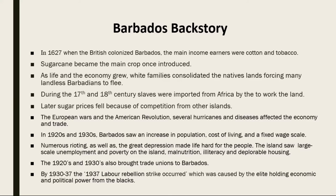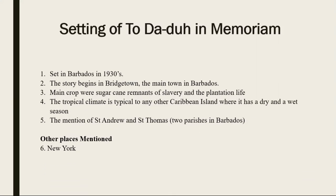Now let us look at the setting of the short story 'To Da-duh in Memoriam.' The story is set in Barbados in the time period of 1937, which we already know had many political changes, civil unrest, and strikes on the island — a very difficult time period. We will notice the mention of Bridgetown, which is the main town with all the major activities taking place in Barbados and remains so to this day. We also see the mention of colonial ties in the main products and infrastructure of the buildings, seen in the sugarcane and the food arcades.